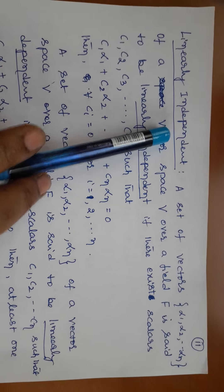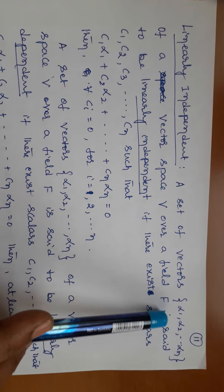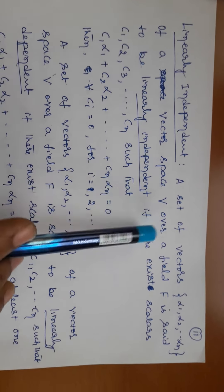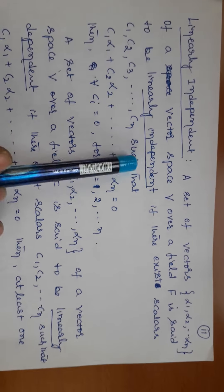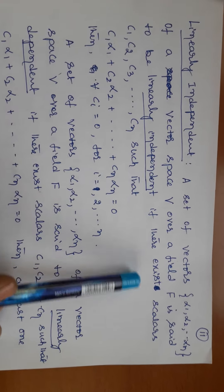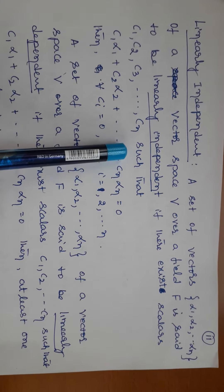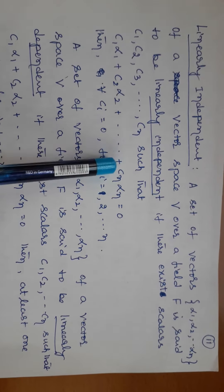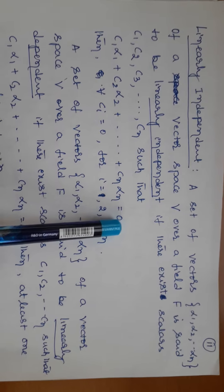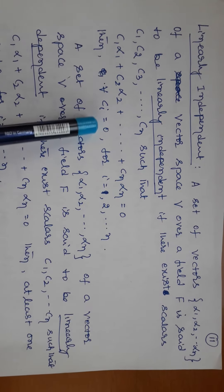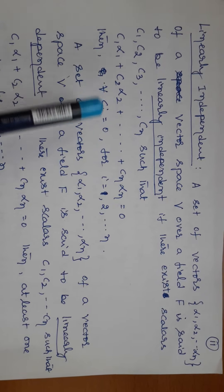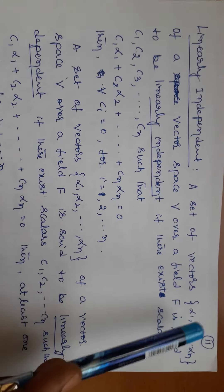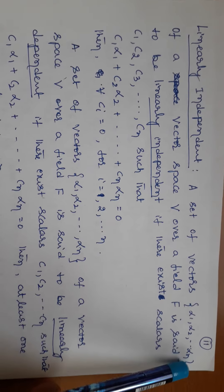Linearly independent means a set of vectors say alpha 1, alpha 2, etc., alpha n of a vector space over a field F is said to be linearly independent if there exist some scalars C1, C2, etc., Cn such that C1 times alpha 1 plus C2 times alpha 2 plus etc. plus Cn alpha n equals 0, and the condition is then every Ci equals 0 — meaning C1 is 0, C2 is 0, C3 is 0, up to Cn is 0. Then we say that the vectors alpha 1, alpha 2, etc., alpha n are linearly independent.